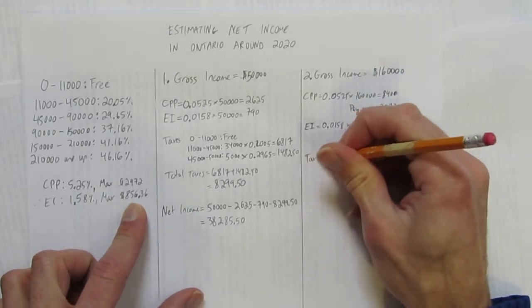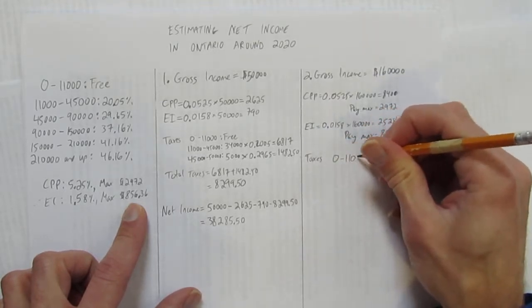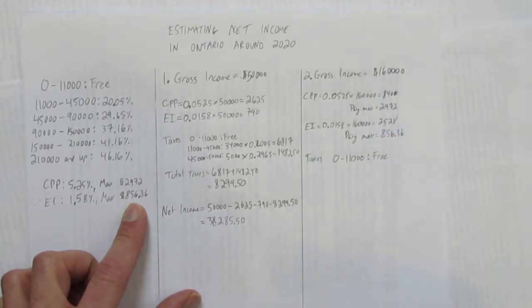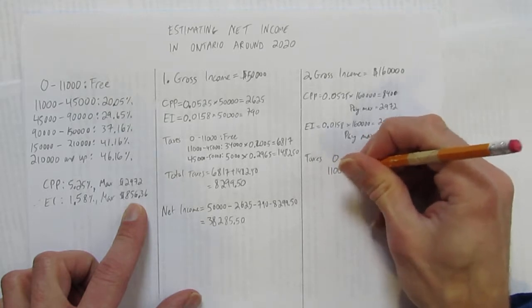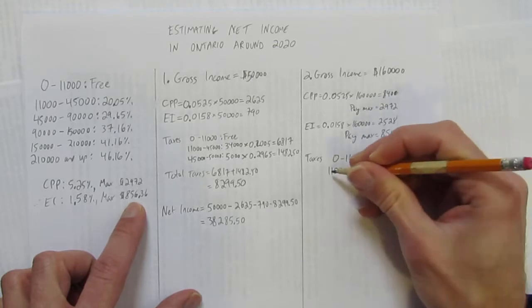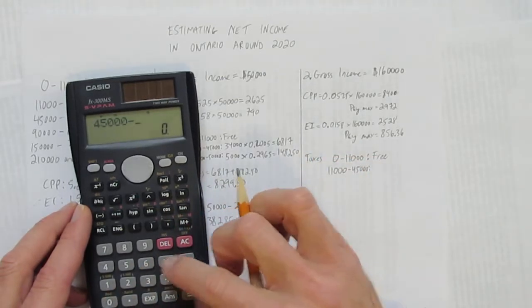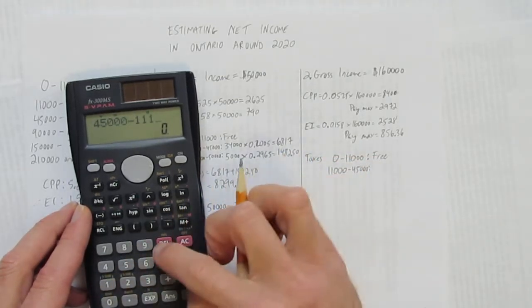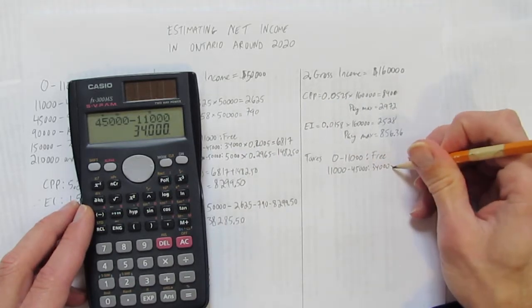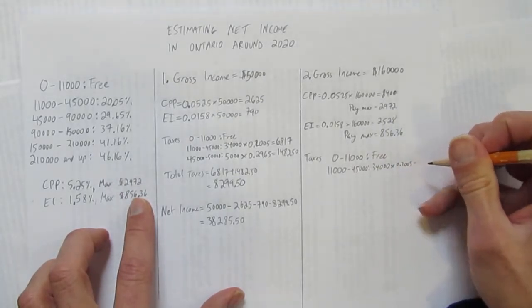How about your taxes? Your taxes, for everybody, even someone making this much money, still gets their first $11,000 free. No tax on that. They also have to pay the same amount on their $11,000 to $45,000. Between those two numbers, there are $34,000, and that gets taxed at 0.2005, which equals $6,817.